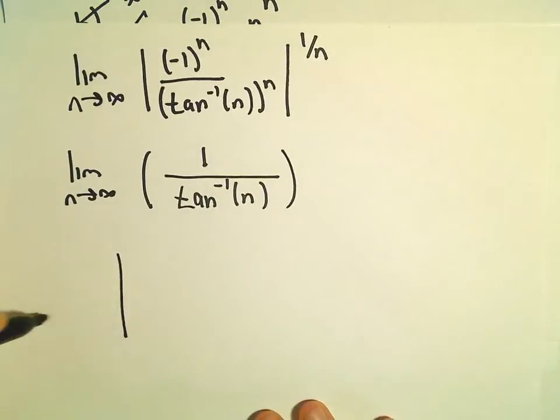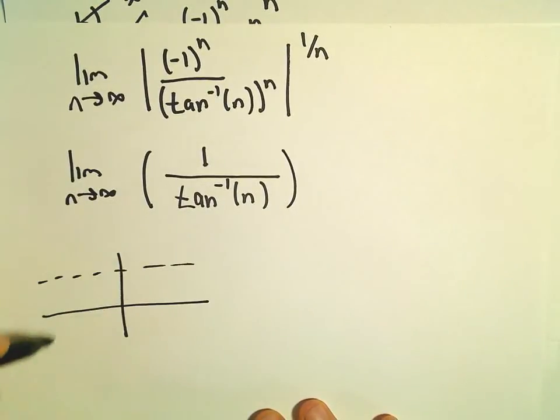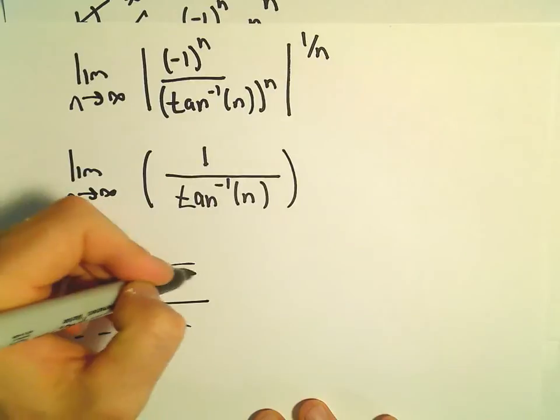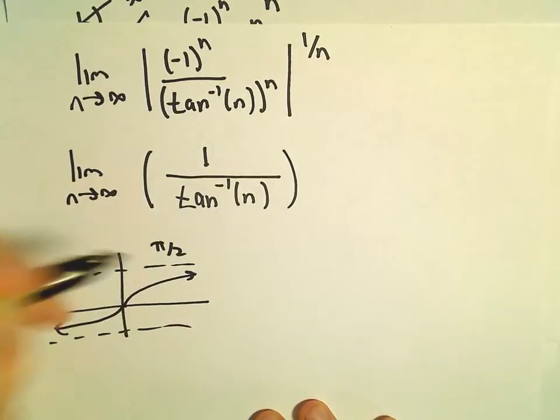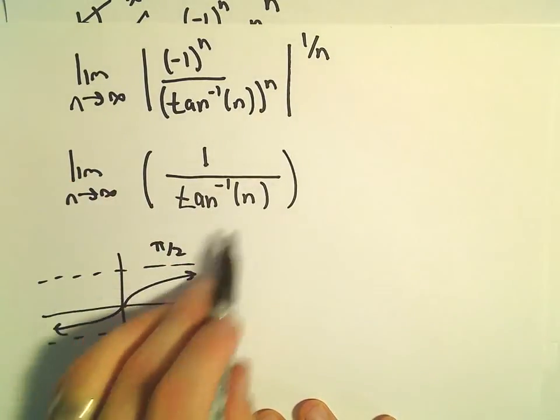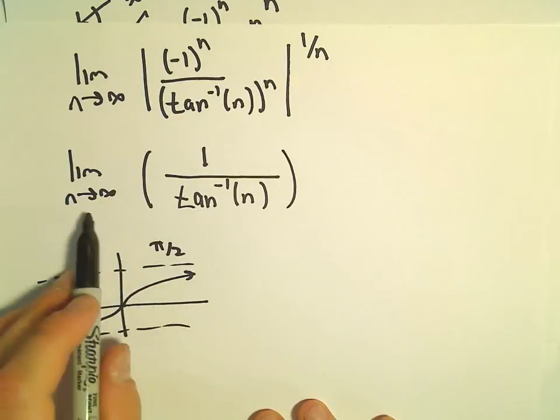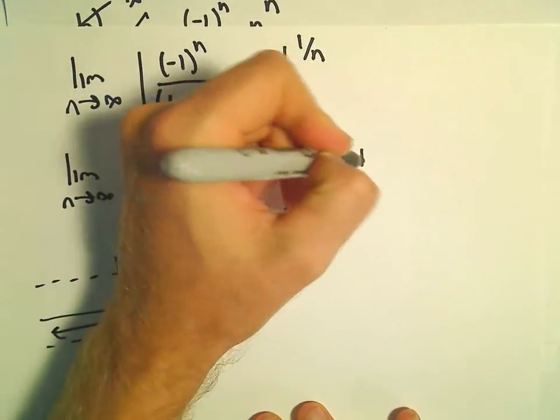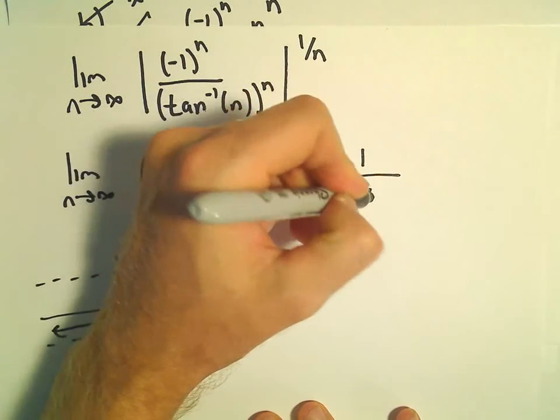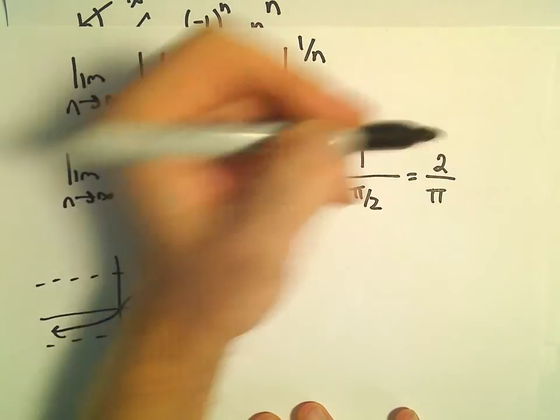Well, recall the limit as n goes to infinity for arctangent. Recall that arctangent will get arbitrarily close to pi over 2 as n goes to infinity. So we're left with 1 over pi over 2. Well, that's going to leave us with 2 over pi.